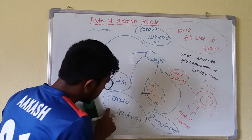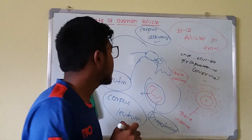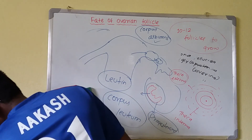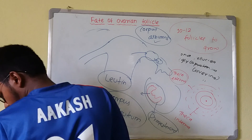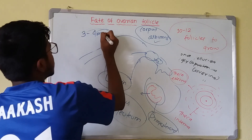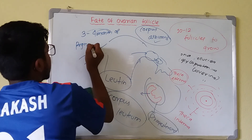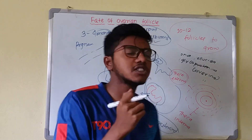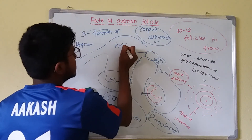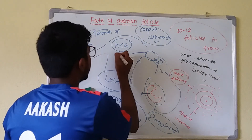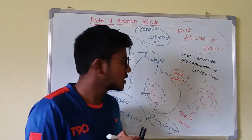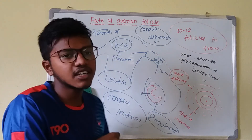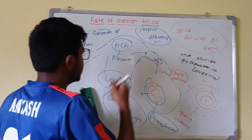However, if sperm fertilizes the ovum in the ampulla of the fallopian tube, the corpus luteum does not regress — instead it becomes the corpus luteum of pregnancy. It continues to secrete progesterone for three to four months of pregnancy. After that, it degenerates because the placenta takes over, secreting HCG — human chorionic gonadotropin hormone. This HCG secretion by the placenta is the basis of the pregnancy test, known as the gravidex test.